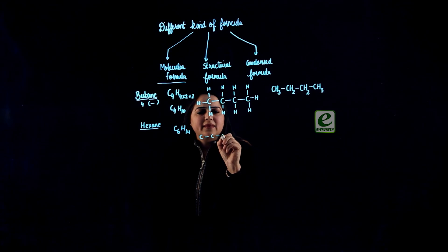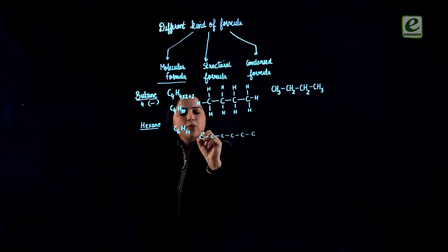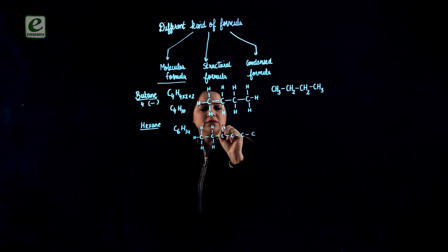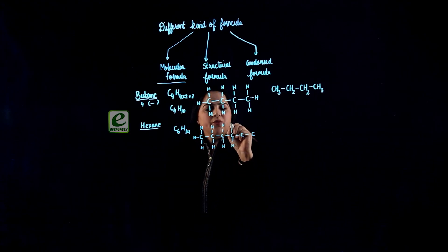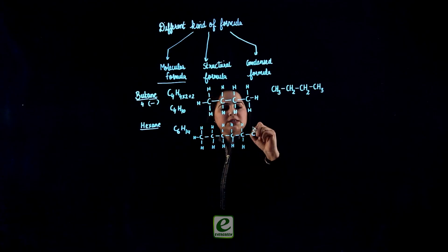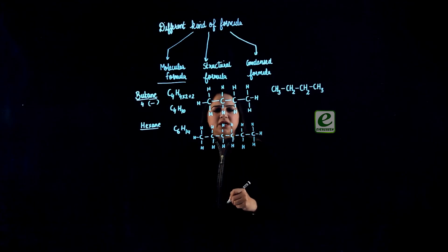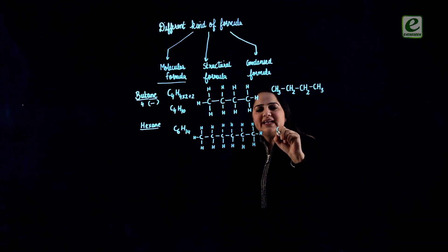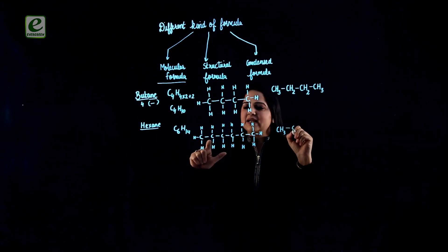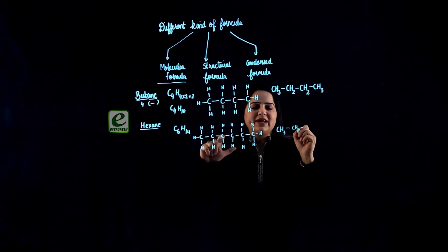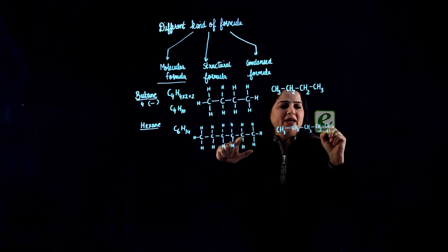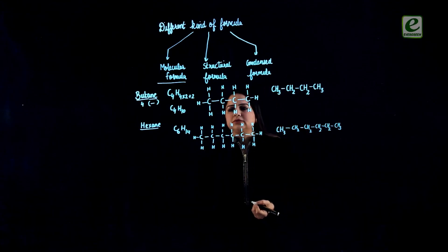If we have 6 carbons, we write down 6 carbons first. The first carbon has 1 bond, so 3 hydrogens. The next has 2 bonds, so 2 hydrogens. Then 2 bonds, 2 more hydrogens. And so on until the last carbon has only 1 bond, so it is associated with 3 more hydrogens. For the condensed formula: the first carbon has 3 hydrogens (CH3), the second through fifth carbons each have 2 hydrogens (CH2), and the sixth carbon has 3 hydrogens (CH3).